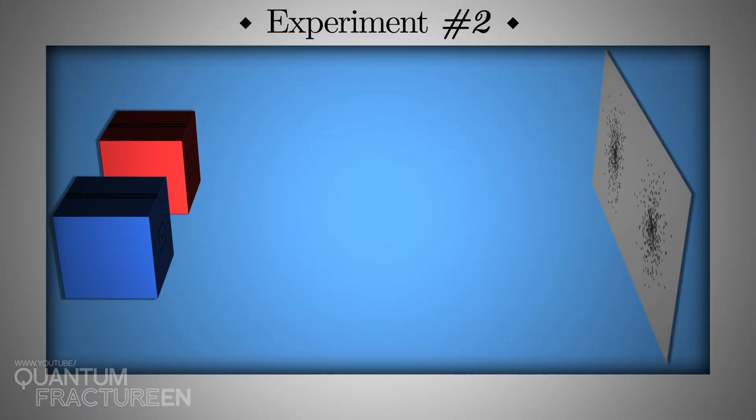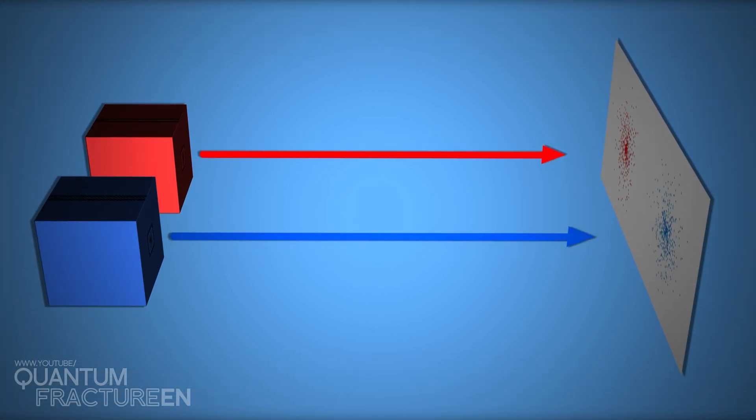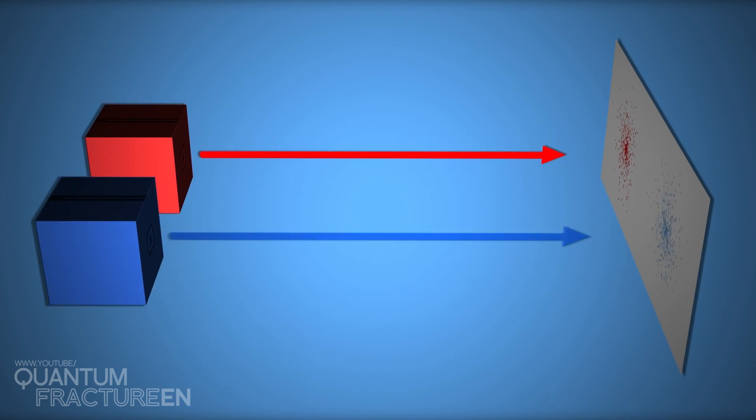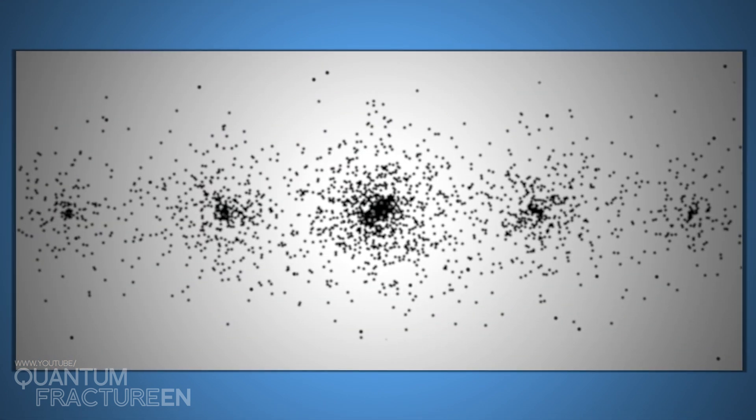And yes, it's true that in experiment number two, the gap between the clusters also increases if you move the boxes apart. The difference is that you know exactly which box shot each atom. If you remove one box and repeat the experiment, you get one of those two clusters. This pattern is clearly the sum of two patterns.